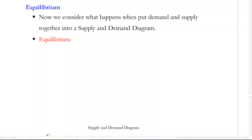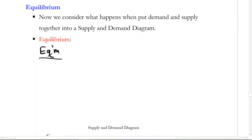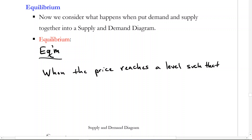We're going to talk about equilibrium when these two things come together. Our definition for equilibrium — and a few of these next definitions are going to be a little redundant — just as I had some abbreviations for quantity supplied and quantity demanded, I often will abbreviate equilibrium with EQM. Equilibrium occurs when the price reaches a level such that quantity demanded equals quantity supplied.